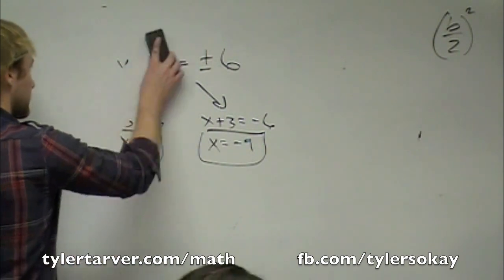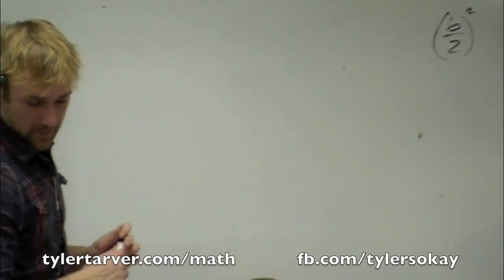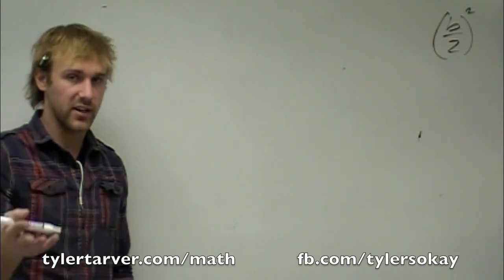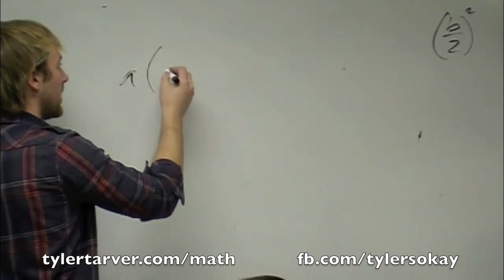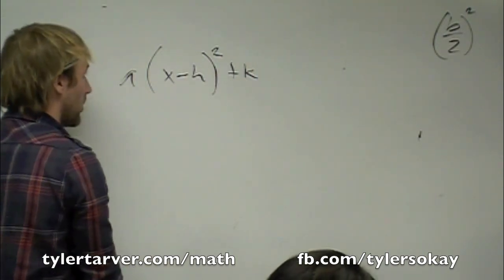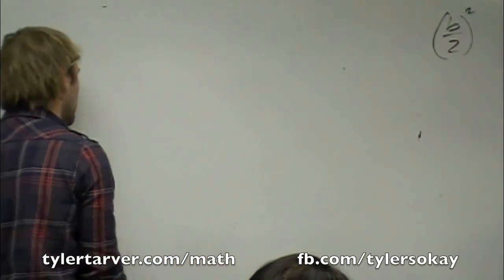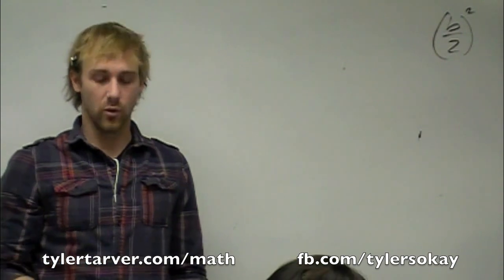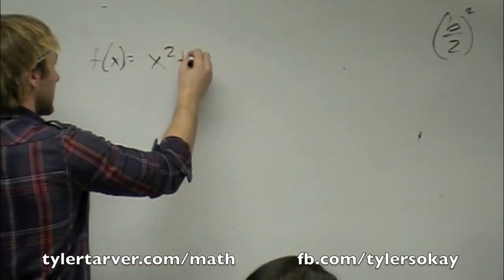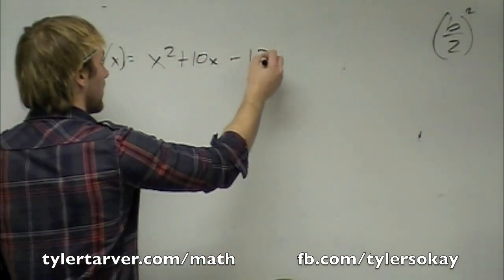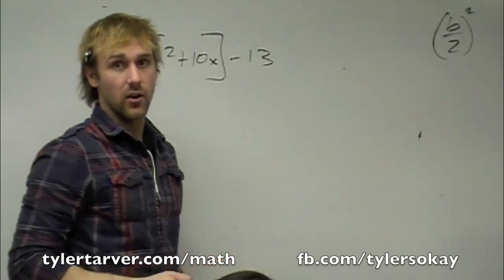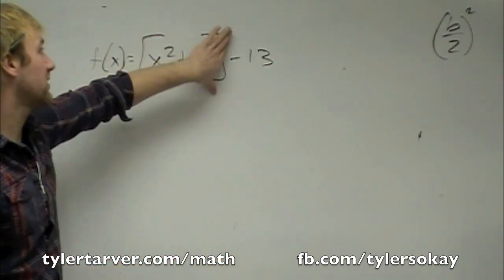Last thing — I want to show you one more way you might see this: writing the quadratic function in vertex form. Vertex form is a times x minus h squared plus k, where h is the horizontal translation, k is the vertical translation, and a is the vertical stretch or compression. Let's say we've got f of x equals x squared plus 10x minus 13. What we're going to do is separate the x squared plus 10x from the negative 13 and do completing the square with just those first two parts, making our own parentheses around them.